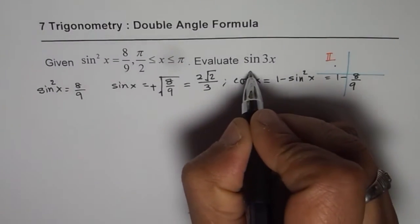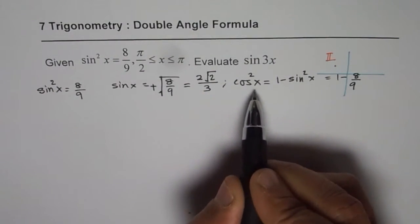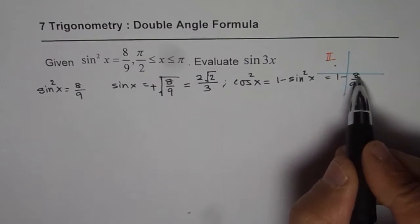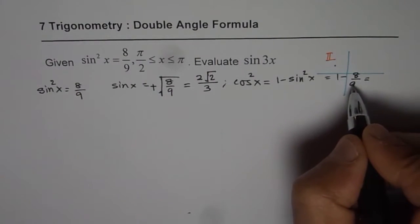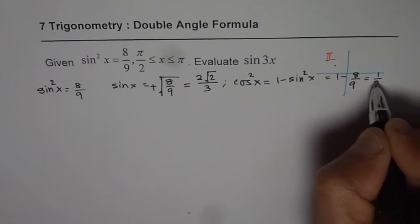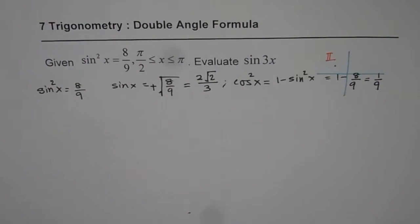I should write cos²x actually. So cos²x is 1 - sin²x, which is 1 - 8/9, and that gives you 9 - 8 over 9 or 1/9.